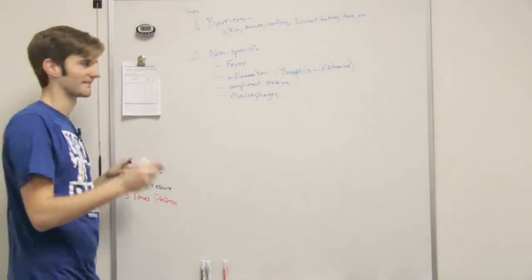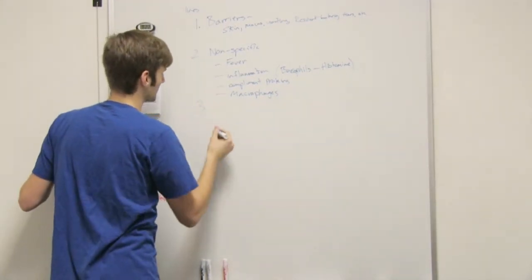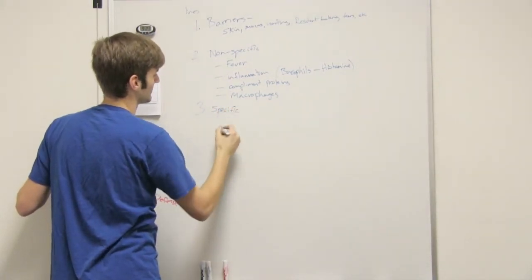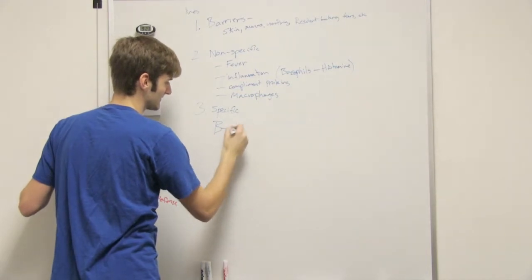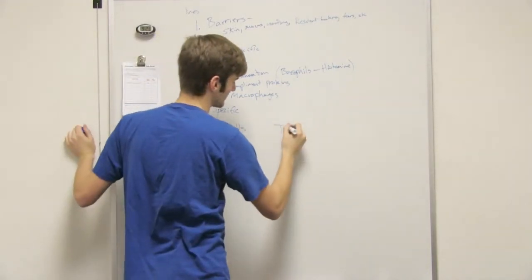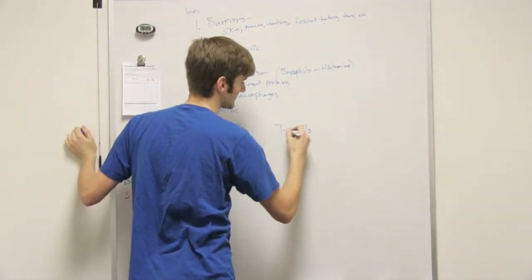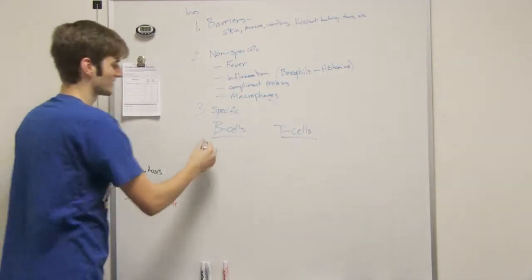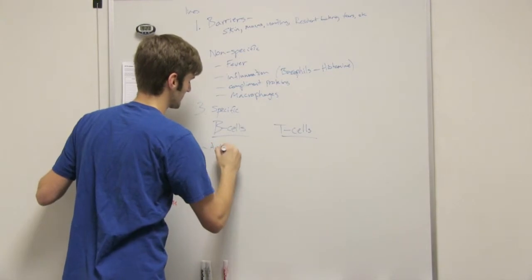So, let's have it. Third line, specific, we have B cells and we have T cells. B cells, the big thing is they produce antibodies.